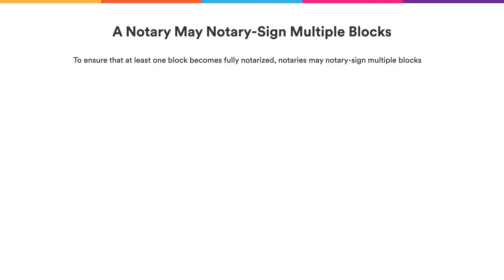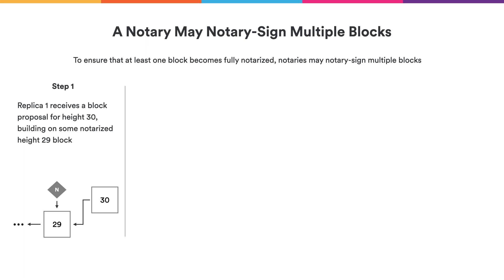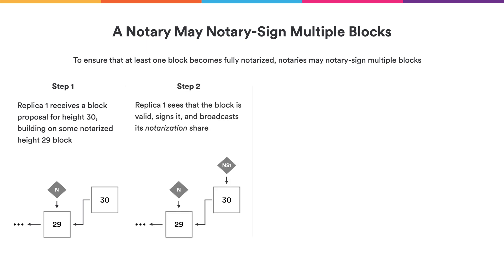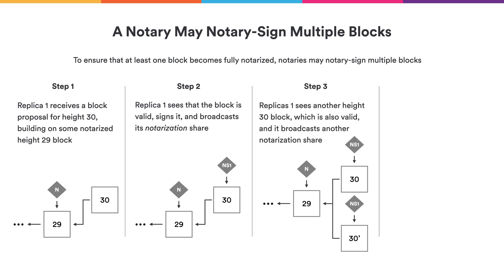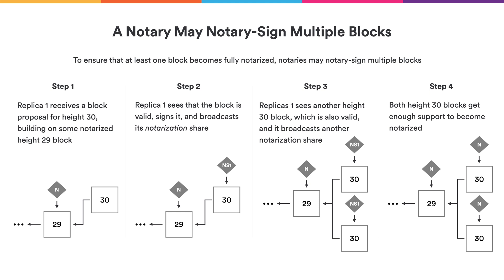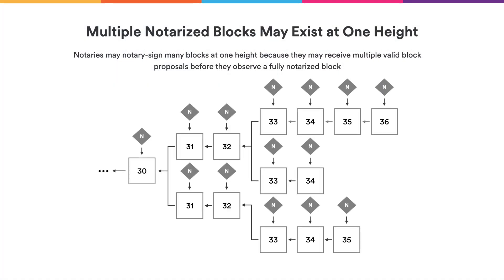Notarization will not always work as smoothly. A replica might see a valid block and create a notarization share, but then see another candidate block at the same height which is also valid. If the replica only signed one block, we might get stuck because some notaries support one block while others support another, and neither gets enough approval. Because we need liveness, the notary will actually sign both blocks, making sure at least one becomes notarized. This way, we might obtain multiple notarized blocks at one height, forming a tree of valid blocks.